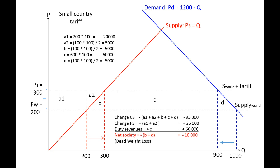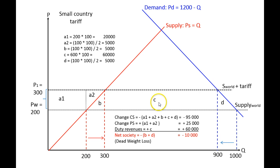The change in consumer surplus is minus A1 + A2 + B + C + D, which sums to −95,000. The change in producer surplus is positive A1 + A2 = 25,000. Area C represents tariff revenues to the government of 60,000. When we add them all together, we end up with a net societal loss of minus B and D — that is the deadweight loss from introducing this tariff.